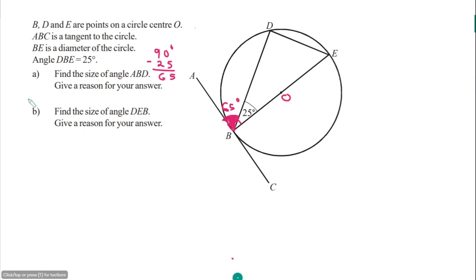Now for a series of shorter angle problems. Problem one: the angle at the center is 88 degrees and we need the angle at the circumference. Since the center is twice the circumference, angle A equals 88 divided by 2, which is 44 degrees. Problem two: if the angle at the center is 46 degrees, the angle B at the circumference is 46 divided by 2, which is 23 degrees.